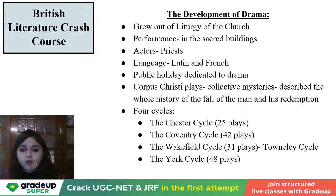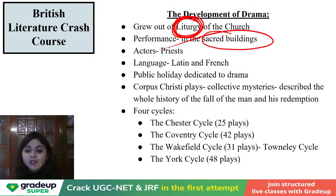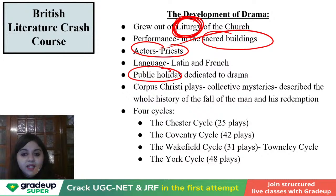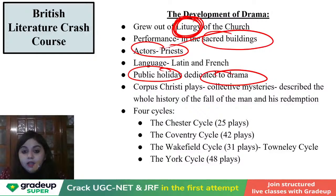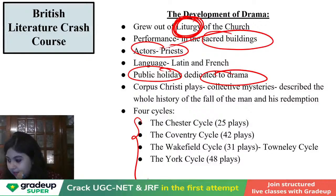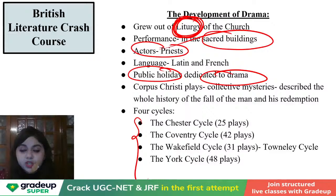Development of drama is coming from liturgy. Plays were performed early in sacred buildings, and the actors in these plays were priests. There was a public holiday dedicated to the day when drama performance took place. There were Corpus Christi plays, telling you about the fall of mankind and the ultimate consequences — the history of mankind is also presented in them. There were four major cycles: the Chester cycle, the Coventry cycle, the Wakefield cycle, and the York cycle. The religious roots are clearly attached to the development of drama.